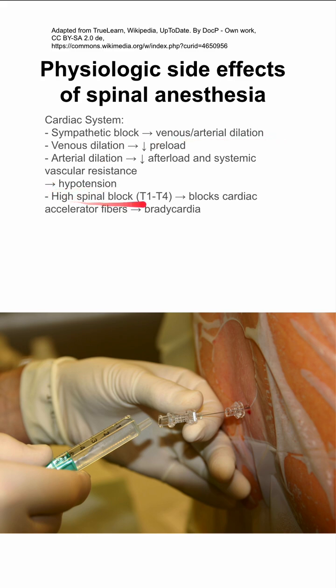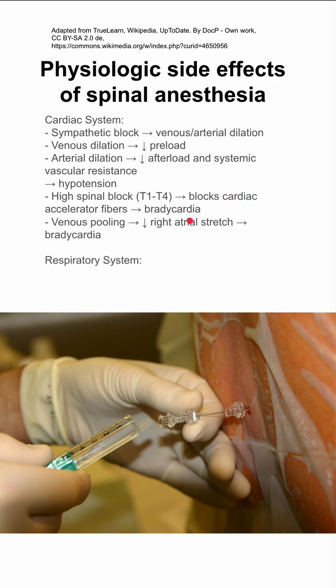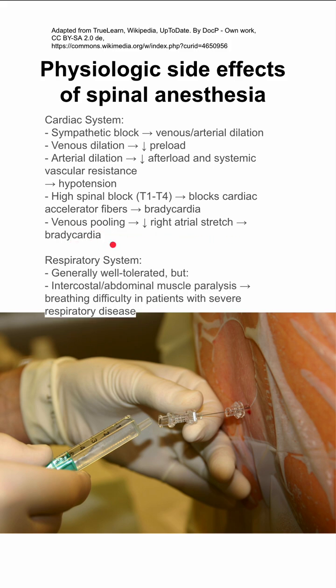If you have a high spinal block reaching levels T1 to T4, you could block the cardiac accelerator fibers, which can result in bradycardia. If you have venous pooling, you can have decreased right atrial stretch, which can also lead to bradycardia.